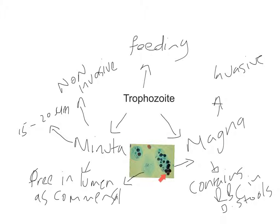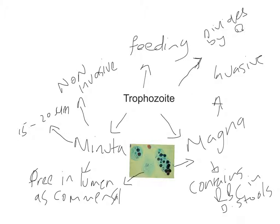Looking inside this trophozoite cell — the magna form — you can see that red blood cells have been ingested, or phagocytosed, by the trophozoite. This is a diagnostic feature of Entamoeba histolytica, because red cells are not found in any other commensal intestinal amoeba. One point to add: the trophozoite divides by binary fission once in about 8 hours.